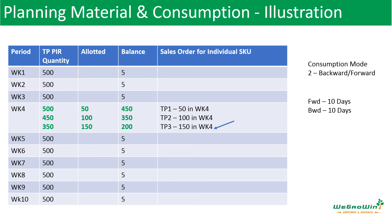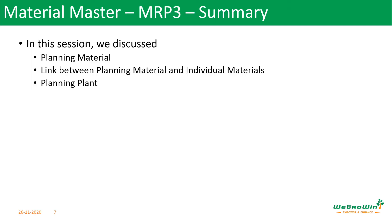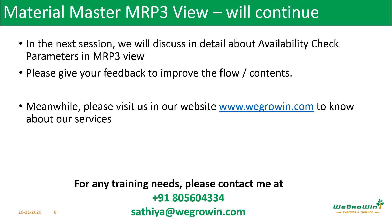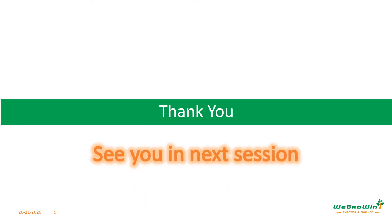If you need specific support, you can write to me at the email provided in this video, and I can help you set the right parameters. In this session, we discussed planning material, how it is linked with individual actual materials, and the purpose of the planning plant. In the next session, we will discuss availability check parameters in detail, which is a very important parameter for production planning and any commitment. Please give your feedback to improve the flow and contents of the course, and visit our website www.vgrovin.com. Thank you all, see you in the next session.